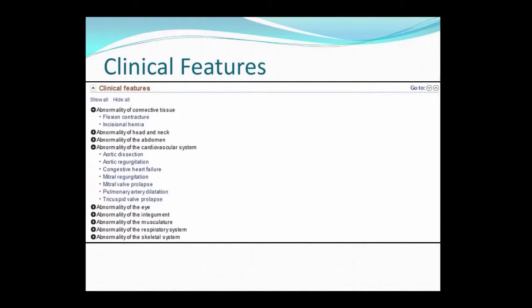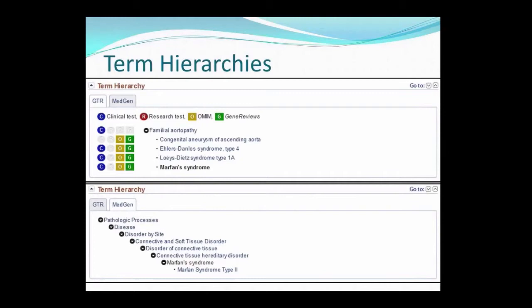Moving down the page, we find the Clinical Features section, where we can review other possible features to look for when our patient is in clinic. Scrolling further down provides the Term Hierarchy section, with two hierarchies discoverable by clicking either tab. The GTR hierarchy is manually curated, while the MedGen hierarchy is provided by MESH. From here, you can click to review other associated conditions. In our case, if we reviewed all the links, you'd find that one symptom, bifid uvula, is a distinguishing feature between EDS type 4 and Marfan syndrome — useful to look for when the patient is in clinic. Many people find this section very useful when studying for board exams.